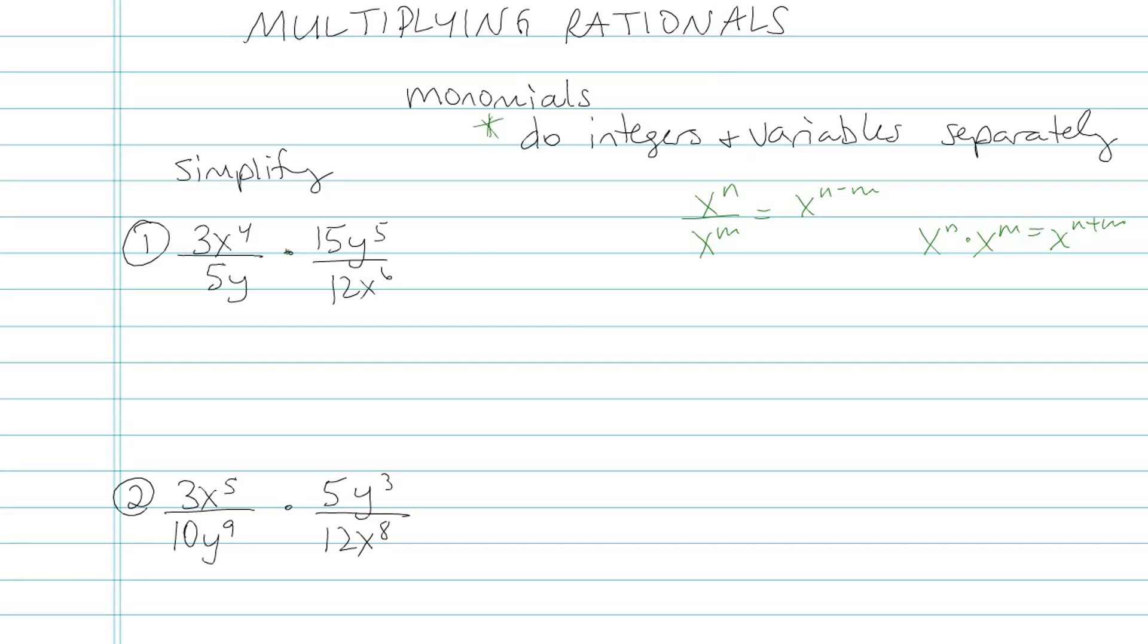So what I want to do in problem number one is look at the integers first and then the exponents next. You have a choice - you could simplify each fraction first or you can multiply across the top, multiply across the bottom and reduce later. It's totally up to you. What I'm going to do is multiply across the top, multiply across the bottom and then simplify. So looking at the integers, 3 times 15 is 45 and on top I have x to the fourth and y to the fifth. On the bottom I have the product of 5 times 12 and then I have x to the sixth y. And notice how I wrote it, integer x's or y's. I wrote them in the same order on top and bottom because that will help me reduce.